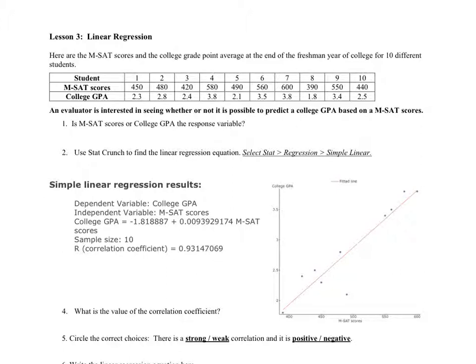So the first question is, is math SAT scores or college GPA the response variable? Well, since we're trying to predict college GPA, that is your response variable. And we're going to predict it based on math SAT scores, so math SAT would be your explanatory variable.